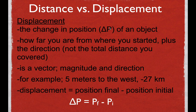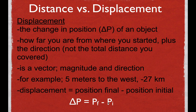Displacement is a vector, which means you have to include the magnitude, the number, and the direction. For example, your displacement could be 5 meters to the west. In physics and math we often use negative and positive, so we could say displacement was minus 27 kilometers, meaning your position changed by 27 kilometers in the negative direction. When you calculate displacement, the equation is simply: position final minus position initial. It's always final minus initial — if you do it the other way around, you'll get the wrong sign.